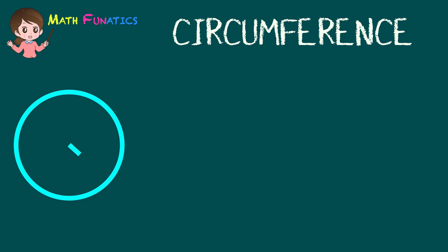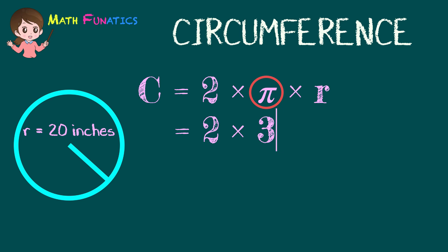Let us try another one. This time, the radius of a circle is 20 inches. Let us use again C equals 2 times pi times R. So copy 2 from the formula. Next, replace pi by 3.14 and the radius by 20 inches.